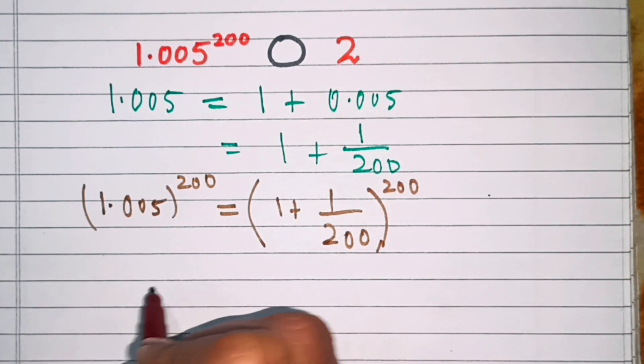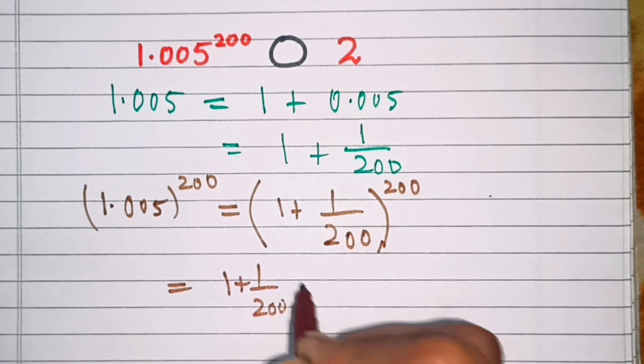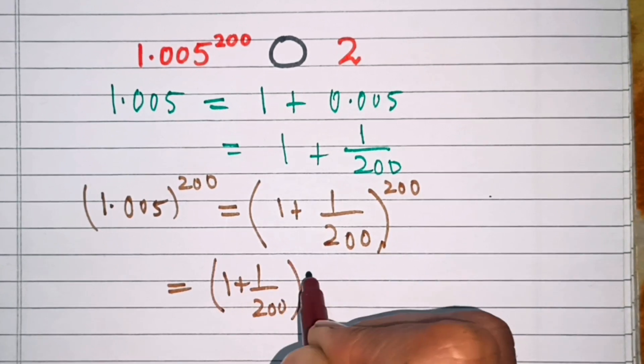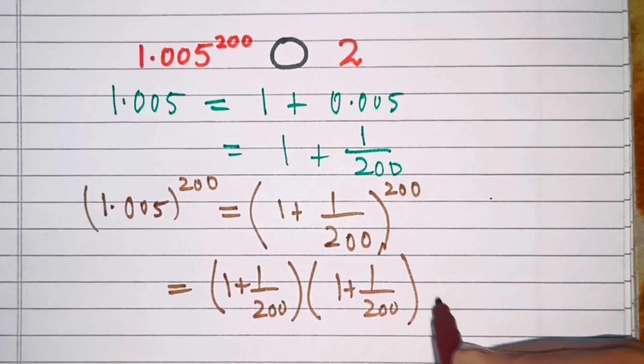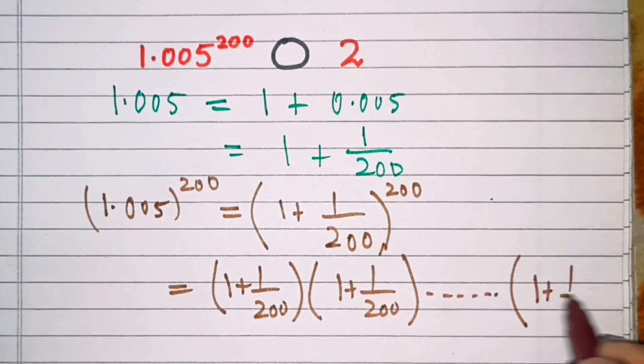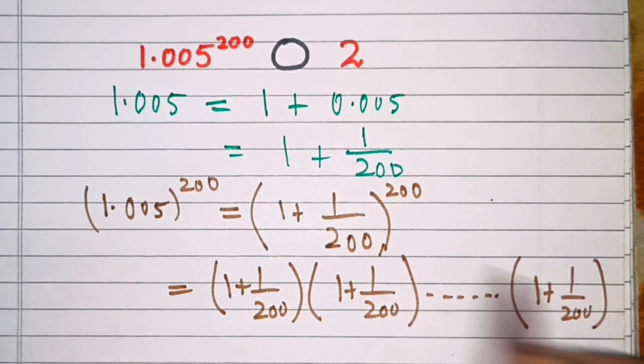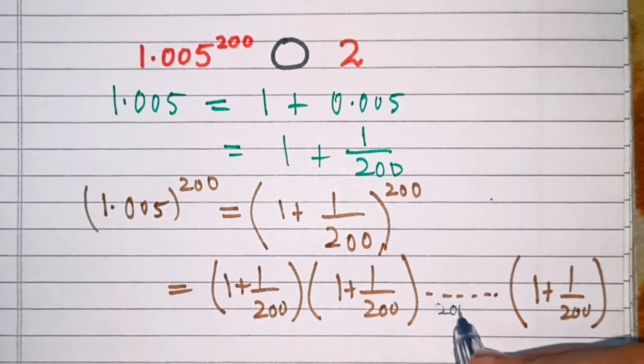Which is equal to 1 plus 1 over 200, then 1 plus 1 over 200, up to 1 plus 1 over 200. Since the power is 200, this fraction gets repeated 200 times.